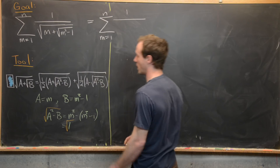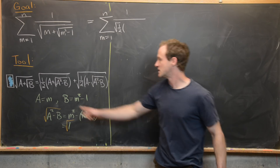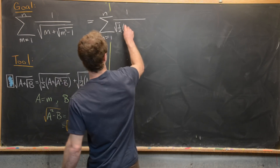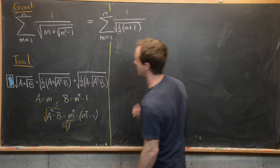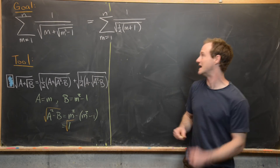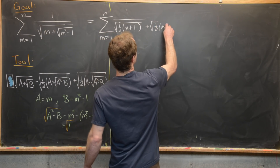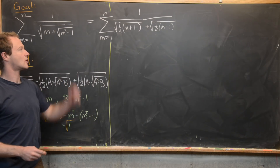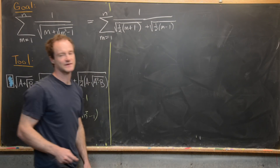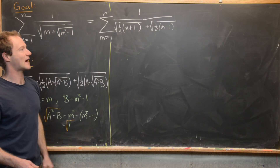That allows us to rewrite the sum from m equals 1 to n. Using our denesting construction, the denominator becomes the square root of one-half times (a plus 1), which is m plus 1, plus the square root of one-half times (a minus 1), which is m minus 1. Now, the one-half under each square root can be flipped to a square root of 2 in the numerator and brought outside.